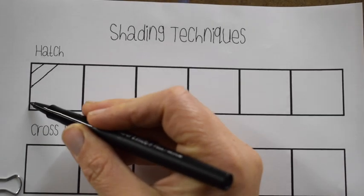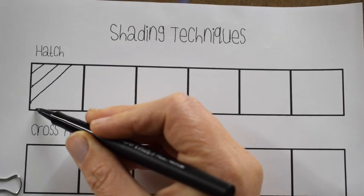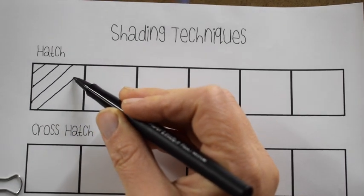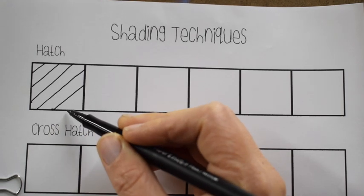Alright. So that first one is called hatch. Hatch refers to a single stroke going usually one way, although that stroke can curve. For now we're just gonna keep this stroke at an angle but straight.